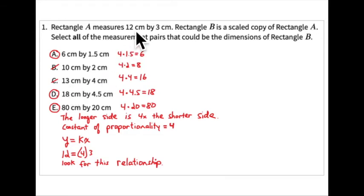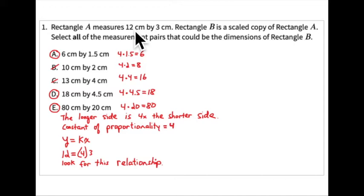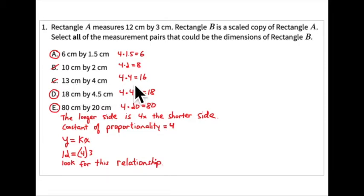Option C — 13 cm and 4 cm — also doesn't work. There's no single scale factor that takes 12 to 13 and 3 to 4. Four-thirds of 12 is 16, not 13. And 4 times 4 is 16, not 13, so the length is not four times the width. C doesn't work.